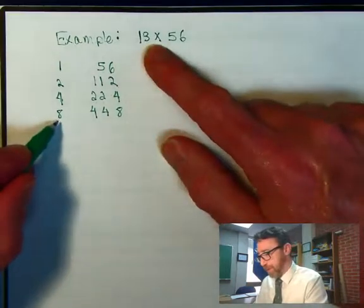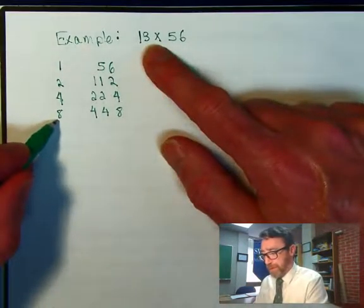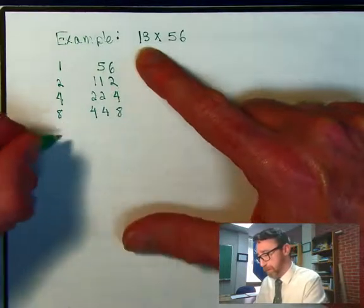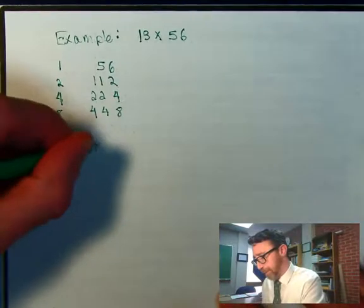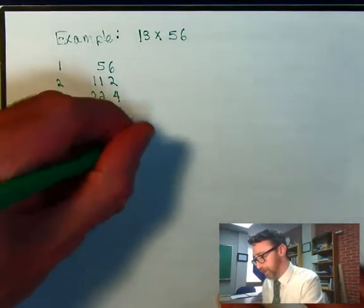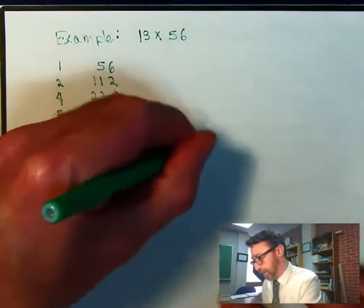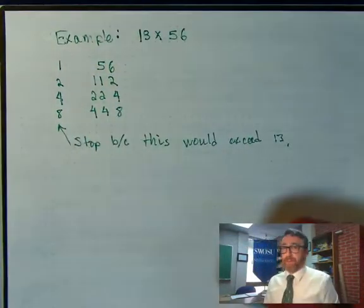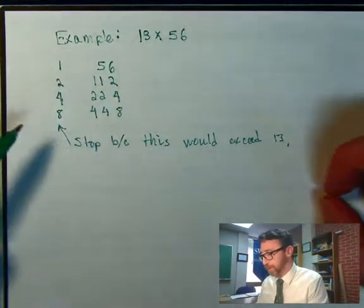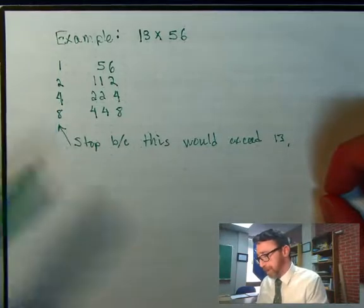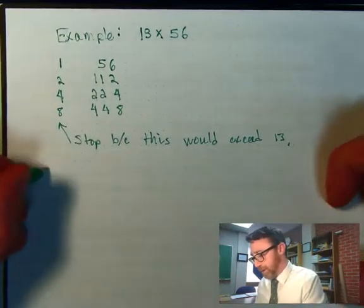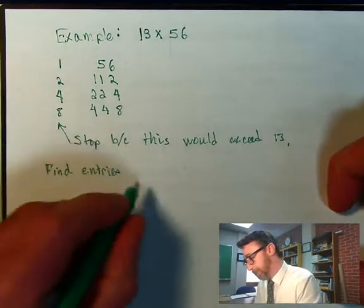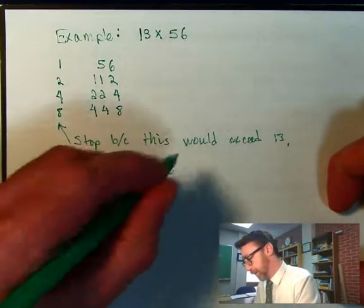Now at this point we can stop because the entries in the left-hand column would exceed this factor of 13. So let me just make a little note of that. We're going to stop here because this would exceed 13. Naturally there's nothing special about 13. That's just what our left-hand factor was.